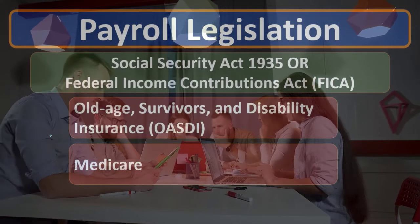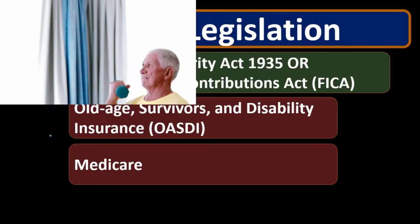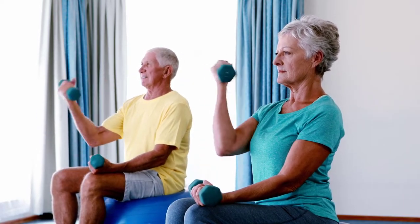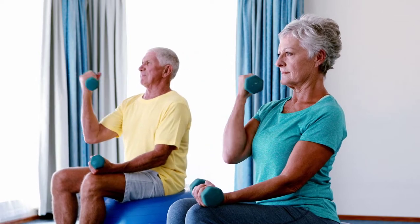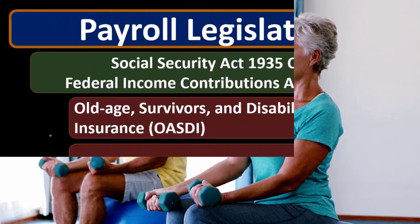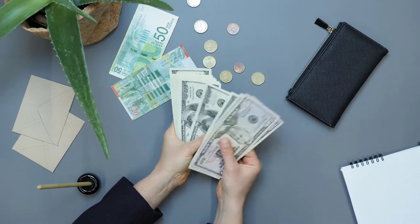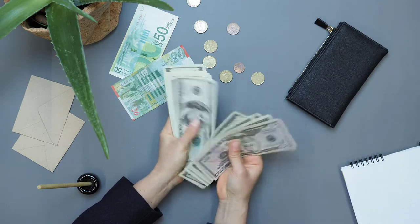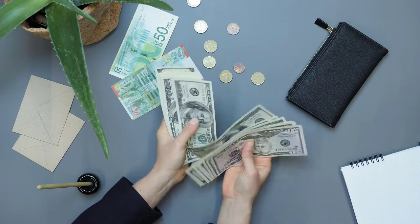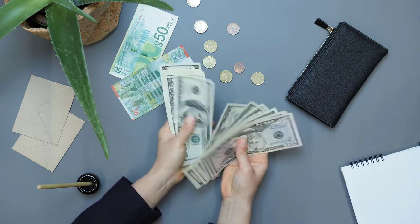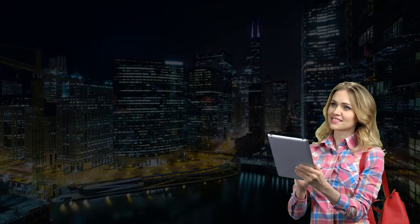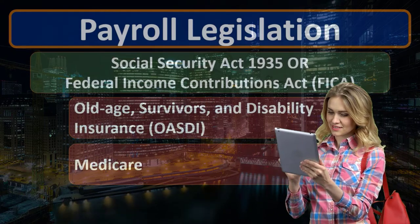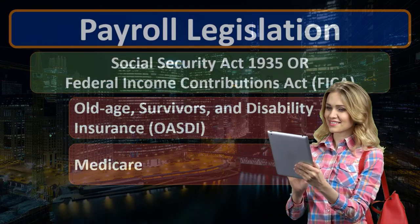Later, as people have started to live longer, FICA has almost converted to being thought of more as a type of retirement plan to supplement income in retirement years. So there's a real debate from a political standpoint — is FICA a safety net helping people beyond their expected lifespan, or is it going to be some form of required federal retirement plan?